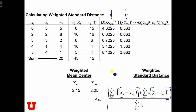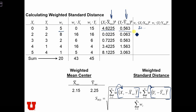The next step is to take the weights and multiply these squared differences by the weights. In the first case, we take the weight of 5 and multiply it by 4.6, which gives us roughly 21 point something. And we take the 5 and multiply it by 0.563, which gives us about 2.6. The rest of the answers are on the next slide.